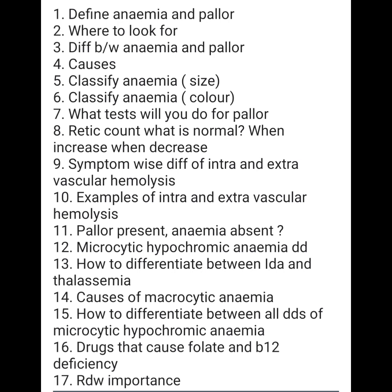Causes. You can divide the causes of anemia and pallor into three things. One is deficiency of intake of iron — that is iron deficiency anemia — or nutritional causes like folate deficiency or B12 deficiency. Then there can be decreased absorption, which occurs in hookworm conditions. Then increased excretion, which can happen in bleeding or malignancy. Some other causes can be hereditary, like sickle cell anemia or hereditary spherocytosis.